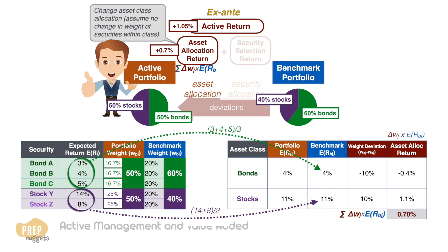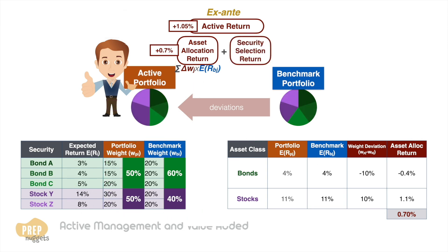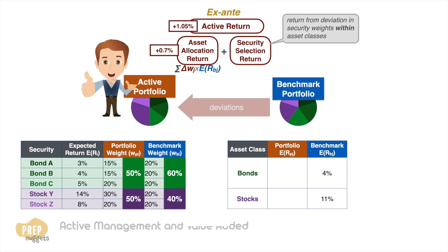We can write the formula for calculating asset allocation as the sum of the product of the change in asset weight allocation and the expected returns. The other part of total active return is known as security selection return — that is, the return from deviation in security weights within asset classes. The sum of these two parts is the active return, which is the 1.05% we calculated earlier. Based on this relationship, the security selection return must be 0.35%.